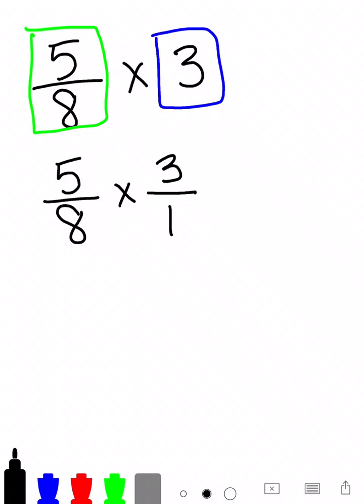Now the nice part about multiplying fractions is we don't have to have a common denominator. We only have to have a common denominator when we add and subtract. So what we can do is actually just multiply it straight across. So 5 times 3 is 15, and 8 times 1 is 8.